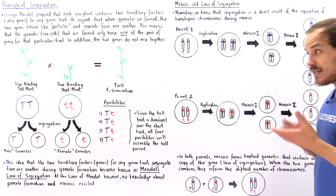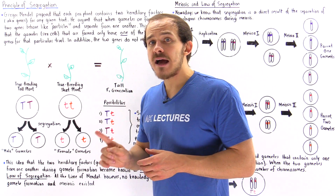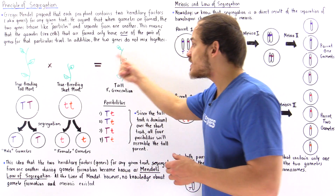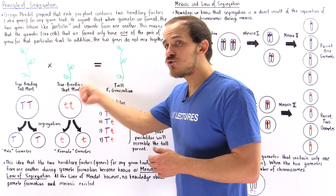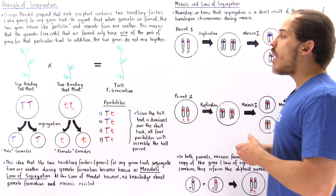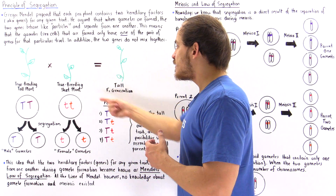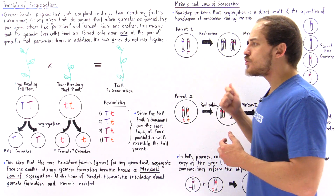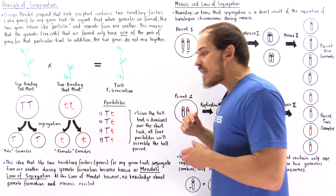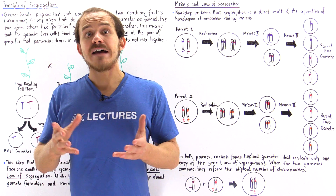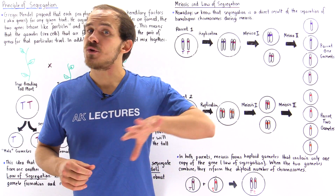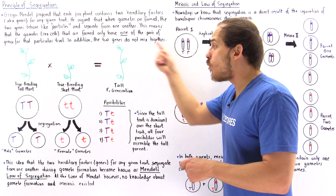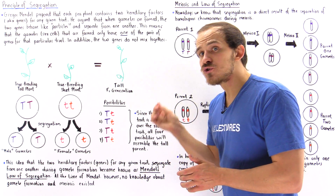Because of this result, Mendel asked: what exactly happens to the trait for shortness within this offspring? Does the F1 generation offspring lose the trait that gives it shortness? To answer that question, he took the F1 generation offspring and crossed it with itself to produce the F2 generation. He saw that although about 75 percent of the F2 offspring were tall, the remaining 25 percent were actually short.